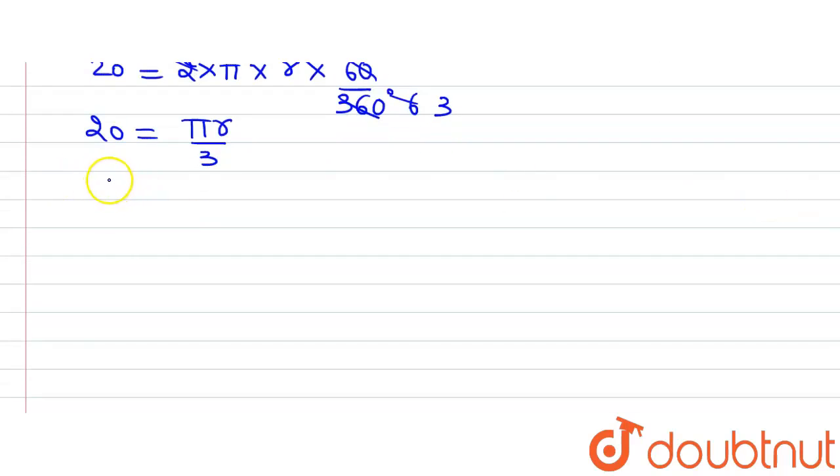Now, this can be written as πR divided by 3 is equal to 20. R is equal to 20 multiplied by 3 divided by π, which will be equal to 60 divided by π cm.